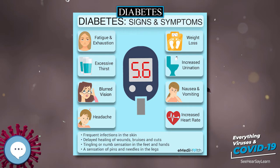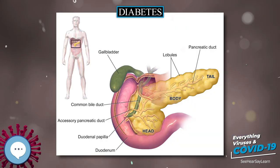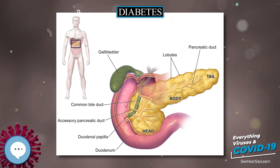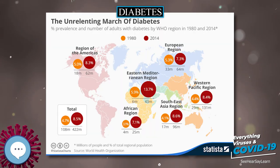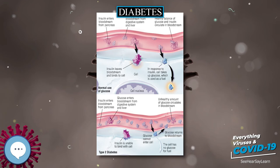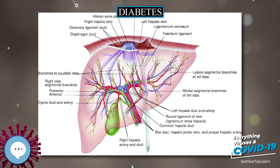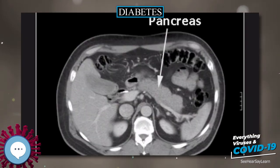The use of aspirin to prevent cardiovascular disease in diabetes is controversial. Aspirin is recommended in people at high risk of cardiovascular disease; however, routine use of aspirin has not been found to improve outcomes in uncomplicated diabetes. 2015 American Diabetes Association recommendations for aspirin use are that low-dose aspirin use is reasonable in adults with diabetes who are at intermediate risk of cardiovascular disease (10-year cardiovascular disease risk of 5–10%).